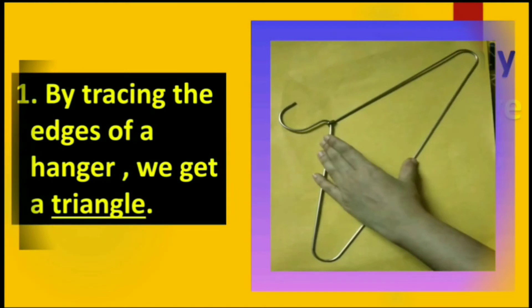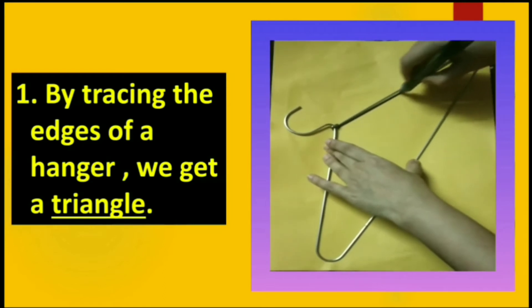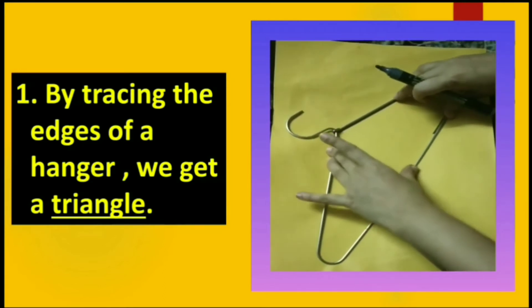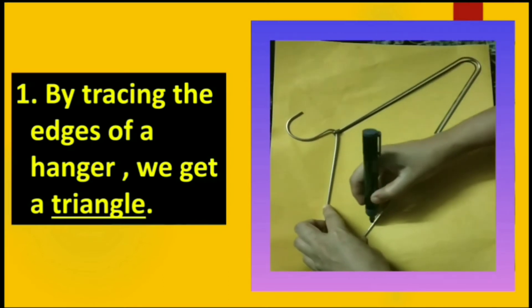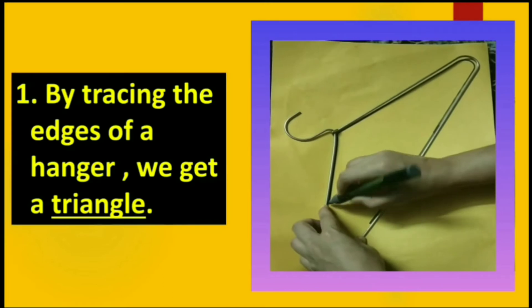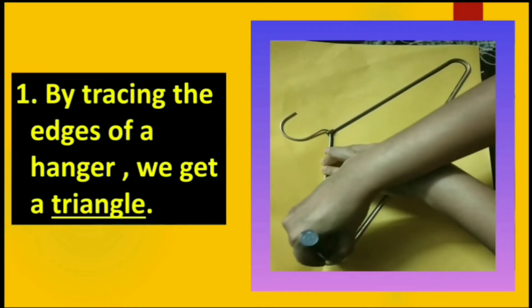Children, now let us see how we can get different geometrical shapes just by tracing the edges of an object. Here the edges of a hanger is traced to get a triangle shape. Yes, this is how we can get a triangle shape.